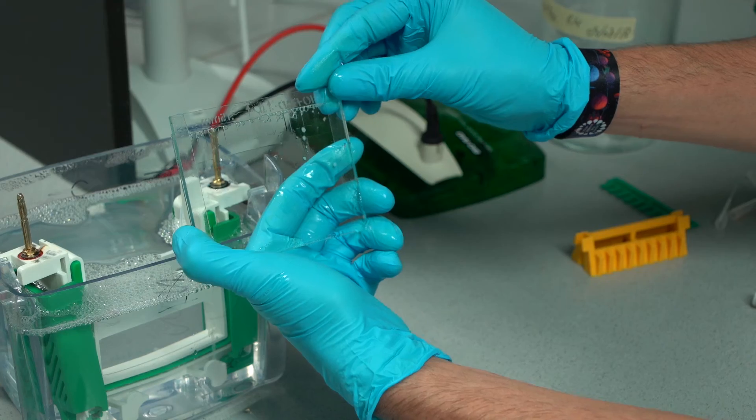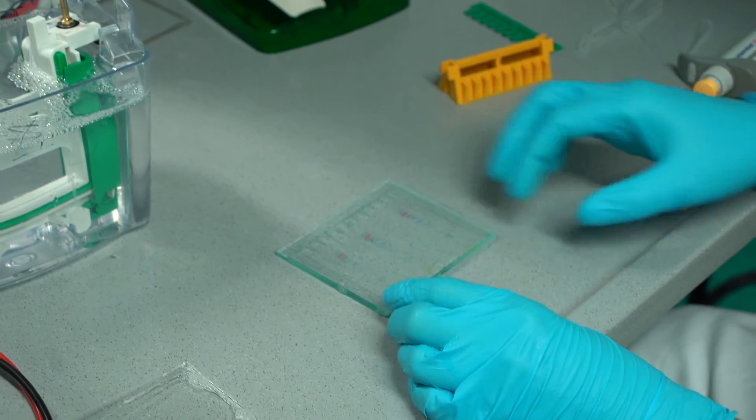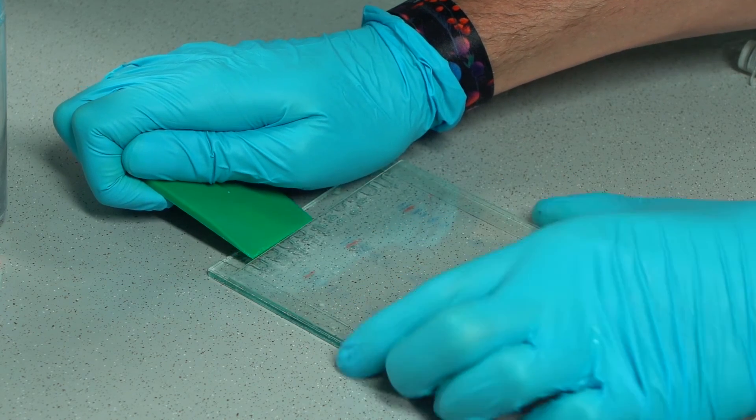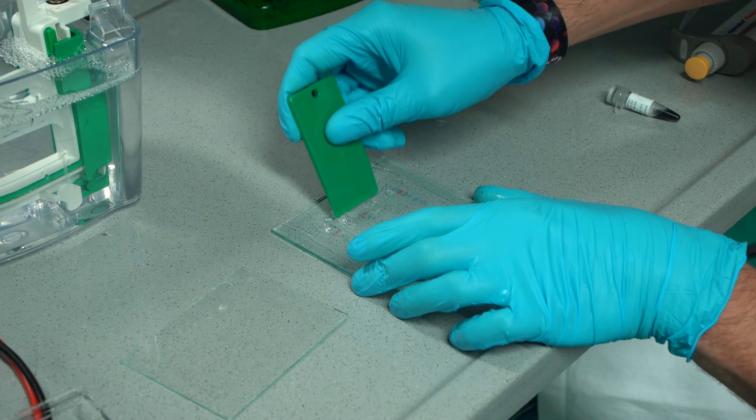To detach the slides, the easiest way to do this is to place the glass plates with the spacer plate on the table. With the green cutting aid, you can carefully raise and release the short plate. Cut the stacking gel away from the running gel using the green cutting aid.